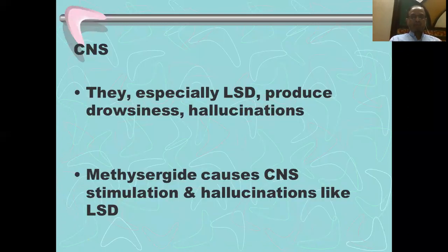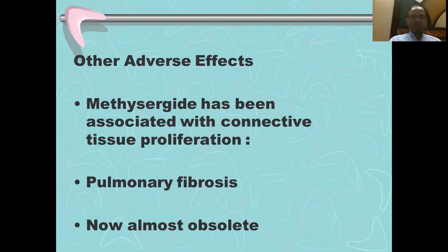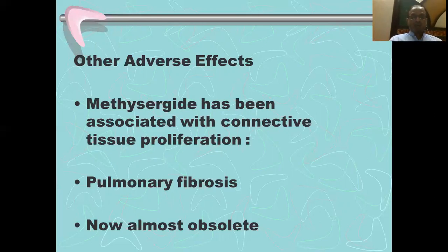In the CNS, LSD especially produces hallucinations by its stimulating actions on both dopaminergic and serotonergic receptors, which produce psychosis. Methysergide may also cause CNS stimulation and hallucinations. However, methysergide is almost no longer used because it causes a more serious adverse effect which is retroperitoneal fibrosis and pulmonary fibrosis. We have mentioned that other drugs like amiodarone and bleomycin also cause pulmonary fibrosis.